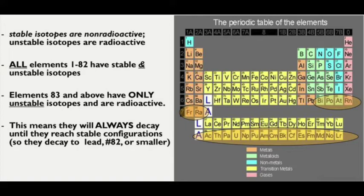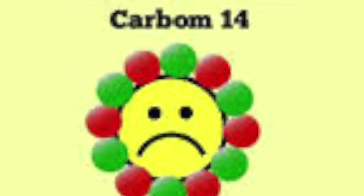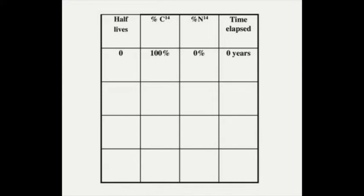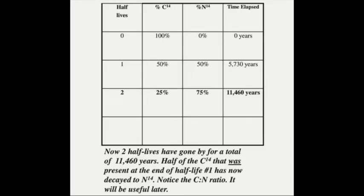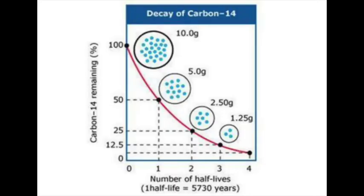Let me give a few examples of parent and daughter isotopes. Take carbon as the parent isotope and nitrogen as the daughter isotope. Carbon is the unstable parent, and nitrogen is the stable daughter. Carbon decays by removing its particles, and the resulting stable form is nitrogen — so carbon is unstable and nitrogen is stable.